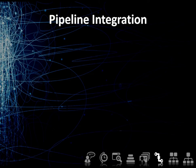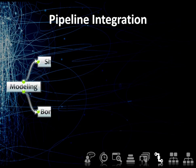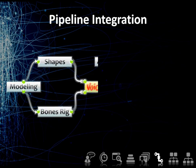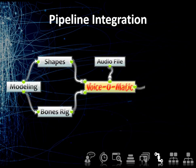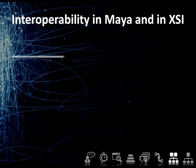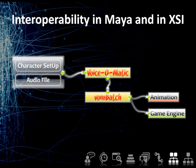Voice-O-Matic's pipeline integration is truly flexible — any type of character setup you may be using right now can be used. Voice-O-Matic will allow you to easily create high quality lip sync animations using only an audio file. Automate your lip sync creations one step further with Von Batch: process thousands of audio files automatically, without any user interaction, while maintaining an impressive lip sync quality. The results can be easily used by animators or directly exported to your game engine.